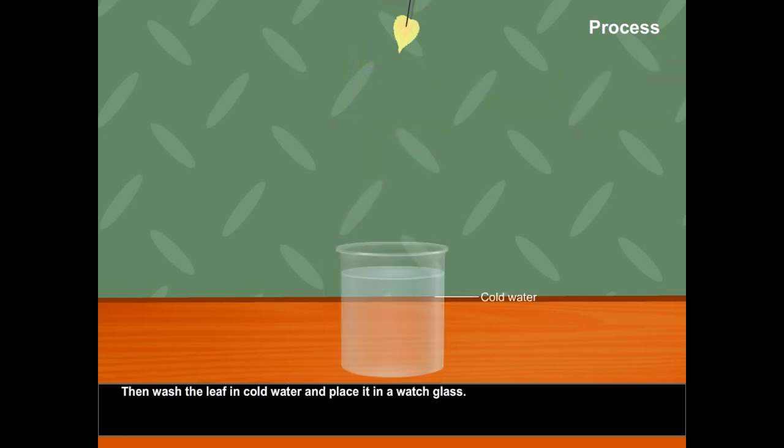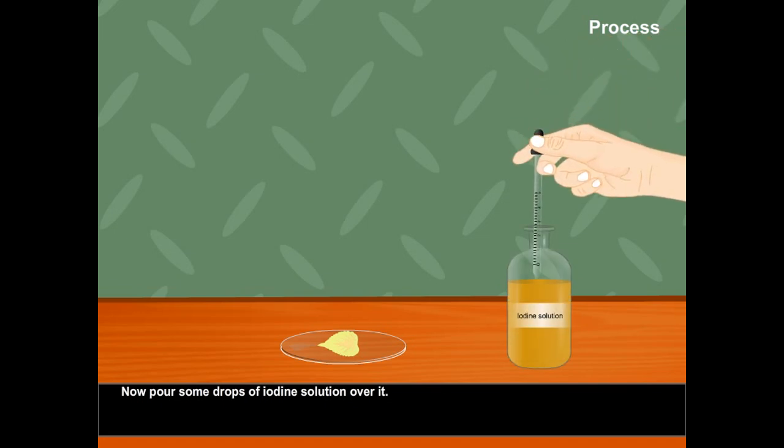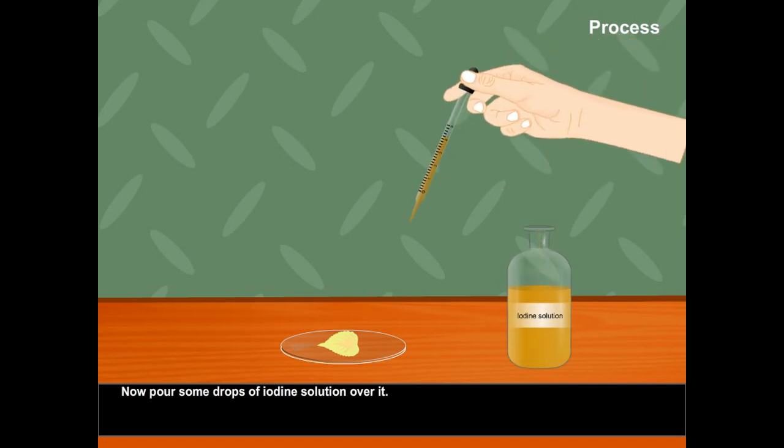Then, wash the leaf in cold water and place it in a watch glass. Now, pour some drops of iodine solution over it.